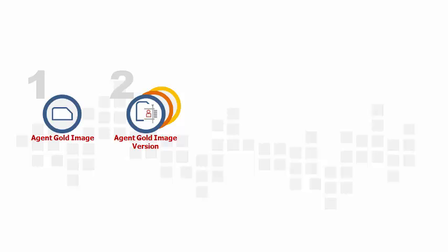There are five steps to updating a management agent using an Agent Gold image. Step 1: Create an Agent Gold image. This is the reference image that you want to use to update your existing management agents. Step 2: Create an Agent Gold image version. This is a version of the Agent Gold image that you want to use to update your existing management agents. Each version can have unique configuration and you can use any version to standardize your management agents.